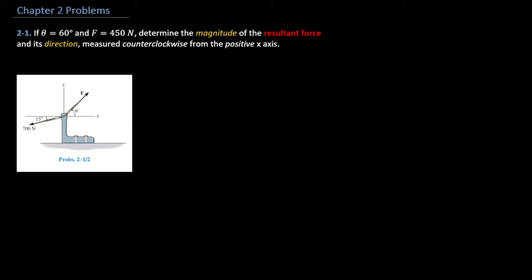Problem 2-1 says, if theta equals 60 degrees and F equals 450 newtons, determine the magnitude of the resultant force and its direction measured counterclockwise from the positive x-axis.